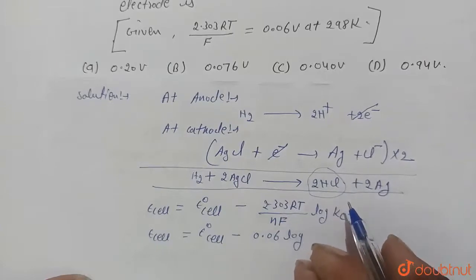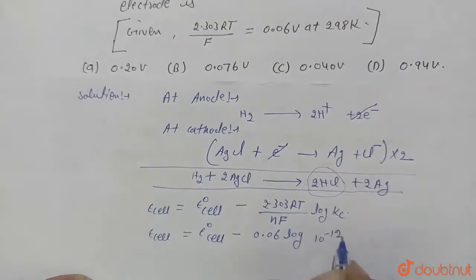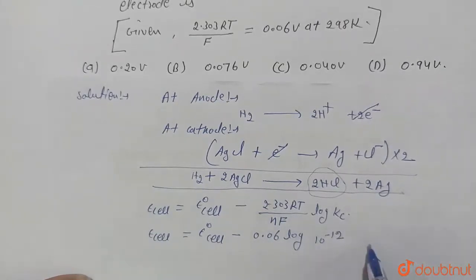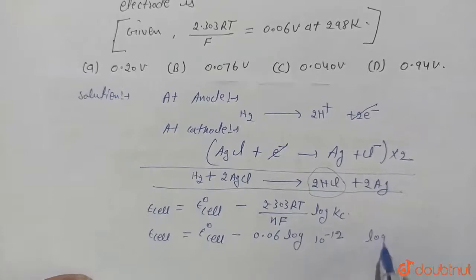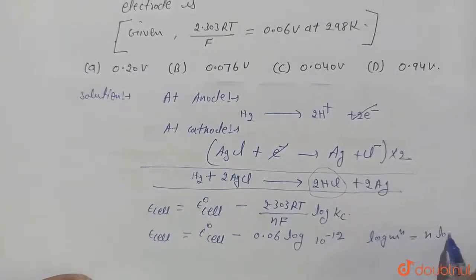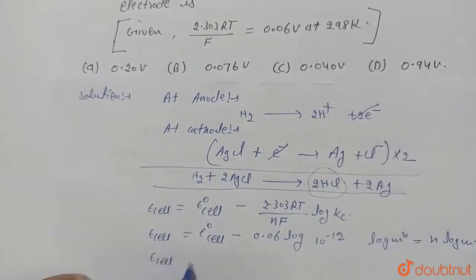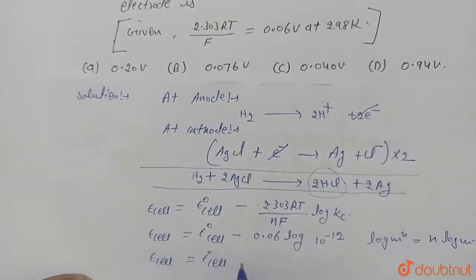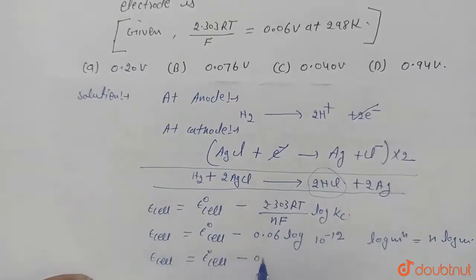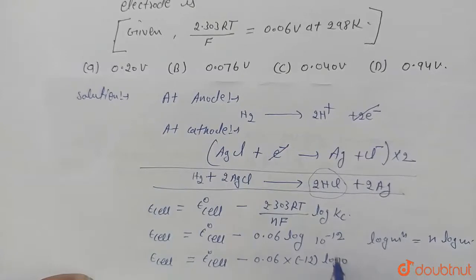10 raised to power minus 6 times 10 raised to power minus 6, then it will become 10 raised to power minus 12. And we know that formula of log m raised to power n, then it will become n log m. Then here E cell equals E naught cell minus 0.06 into minus 12 log 10, and value of log 10 will be 1.